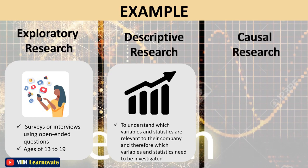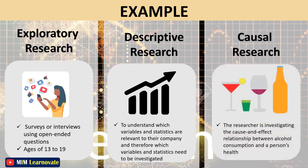A researcher is trying to study the effect of alcohol consumption on health. They select a sample group consisting of people who consume different amounts of alcohol and then also observe different metrics that are indicators of health. This is an example of a causal research design as the researcher is investigating the cause and effect relationship between alcohol consumption and a person's health.